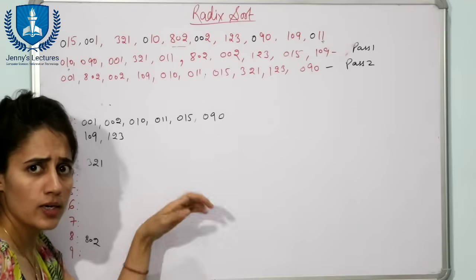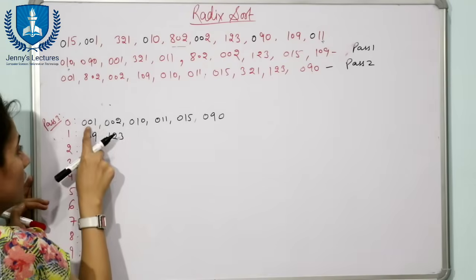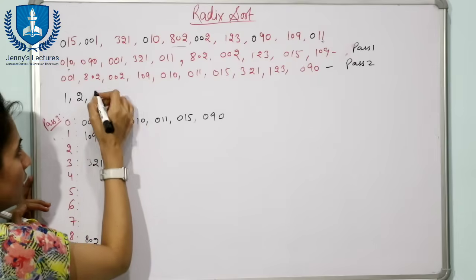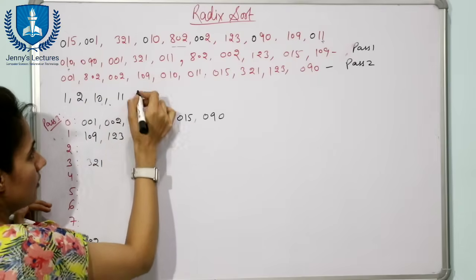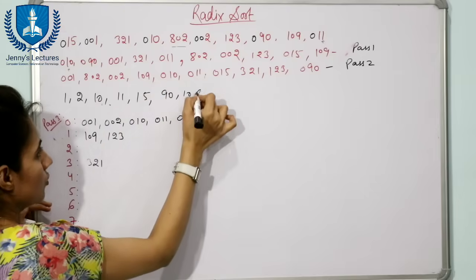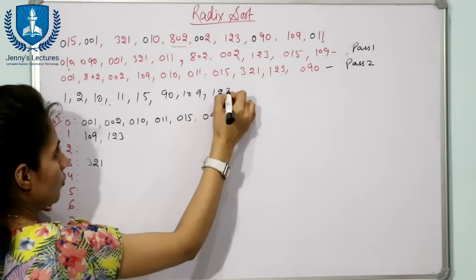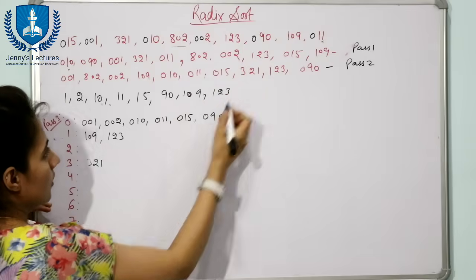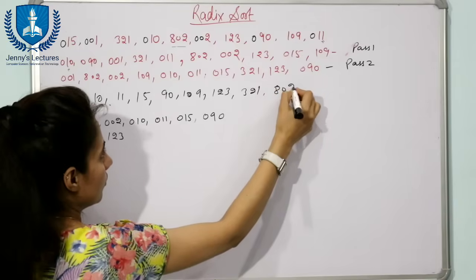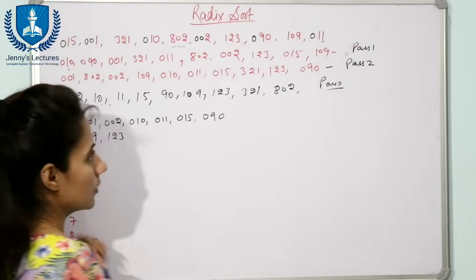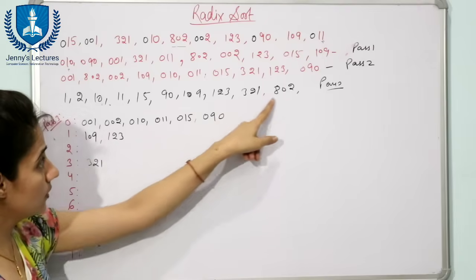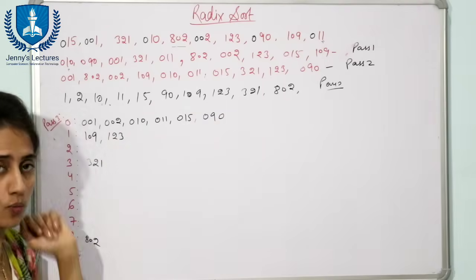We store the removed data in an output array. The final output after Pass 3 gives us: 1, 2, 9, 10, 11, 15, 90, 109, 123, 321, and 802. This is the data after Pass 3 — as you can see, this is the sorted data.